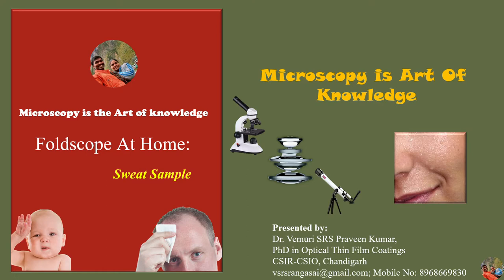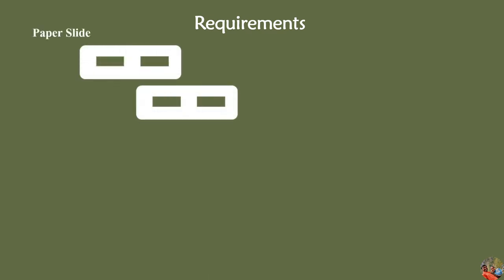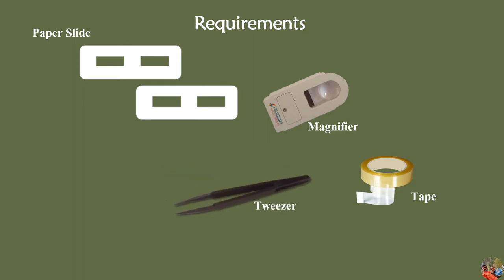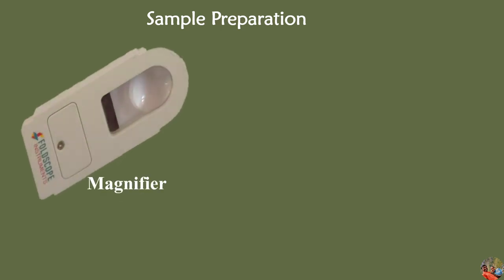Coming to the answers of this Sweat Sample, we will see some requirements to view this sample under Foldoscopy. The requirements are Paper Slides, Magnifier, Tape, Tweezer, as well as Scissors. All these components are important to understand the Microscopy of Sweat Sample. Once after collection of these components, we will see how this Magnifier will be used to see the Magnification of this Sweat Sample, and after that we can collect the images.